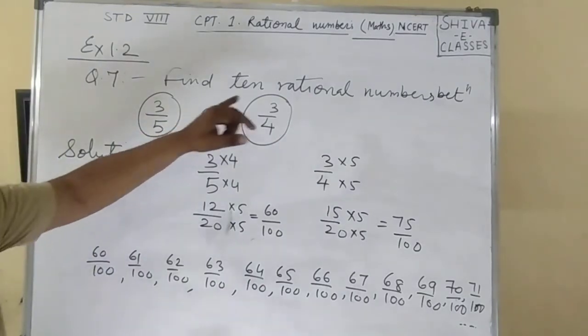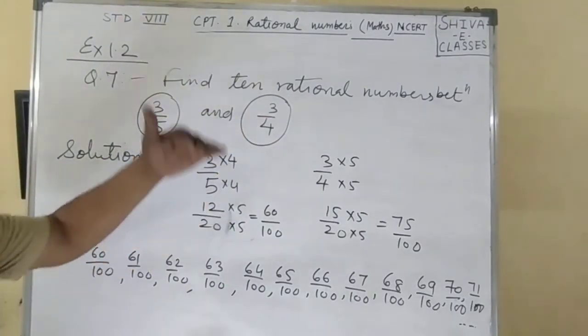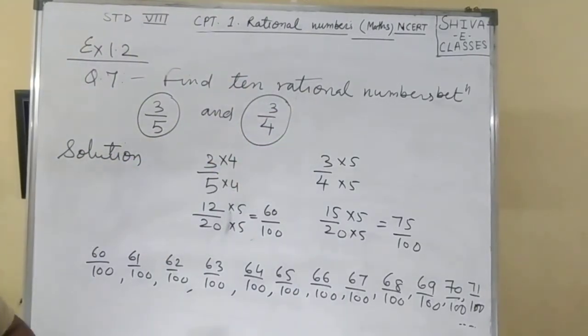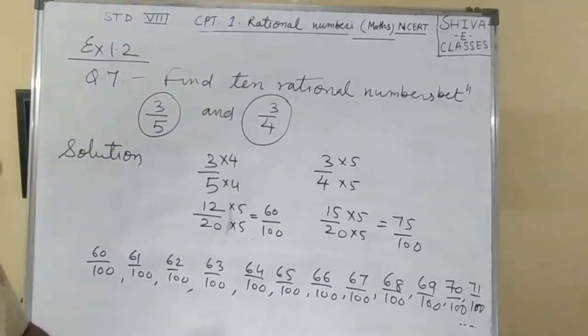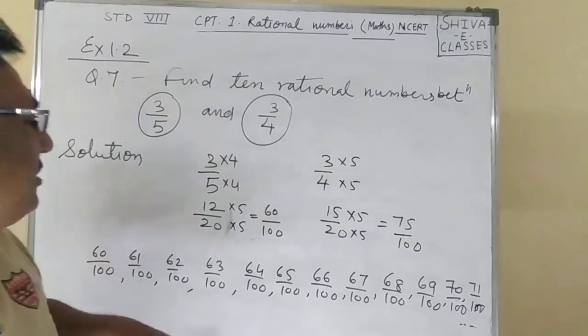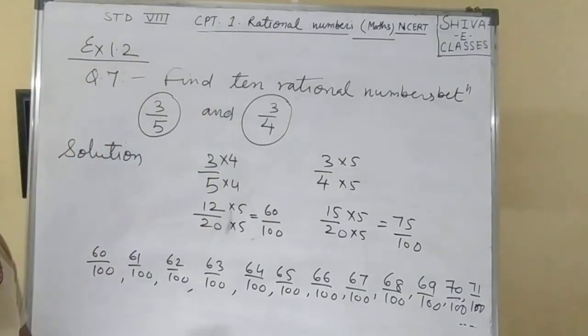In general, if the difference between the numbers is less than required - 5, 10, or 15 - then multiply the numerator and denominator to find more numbers between them.